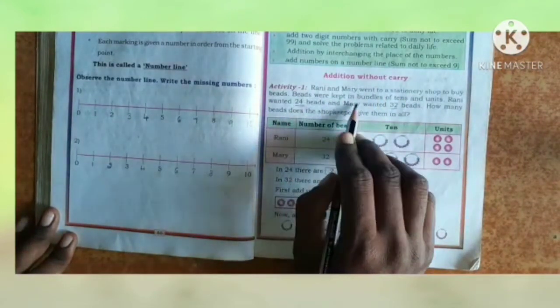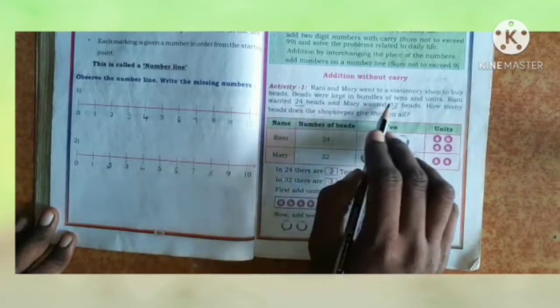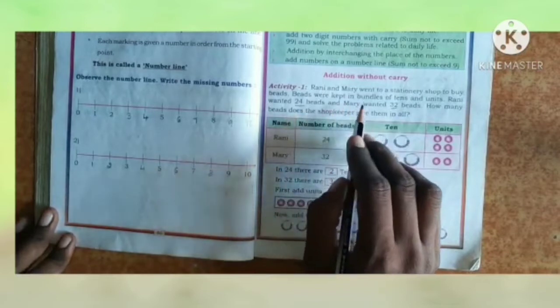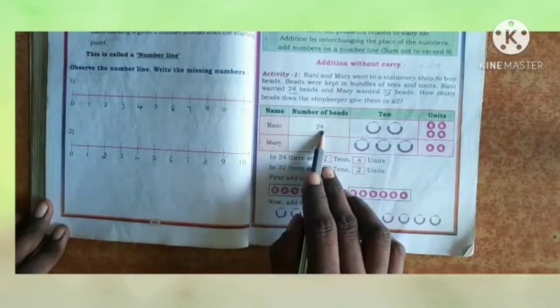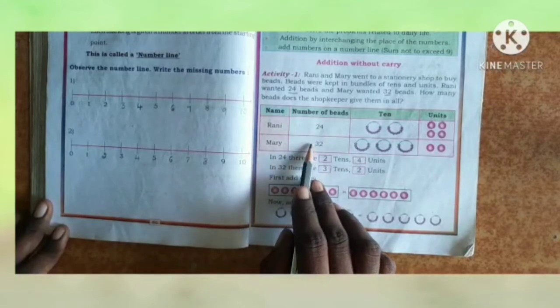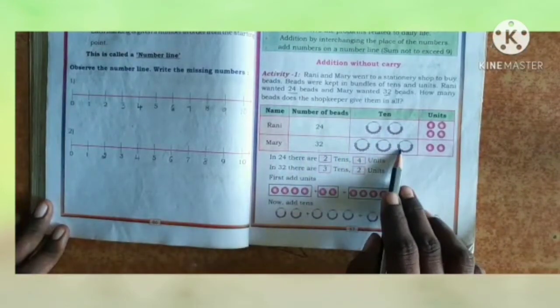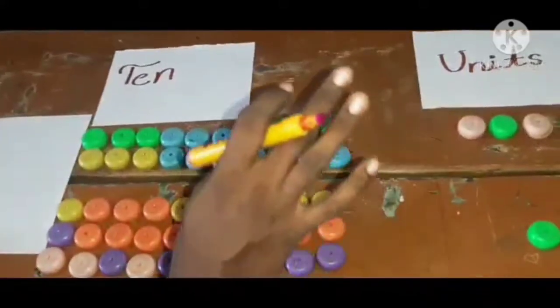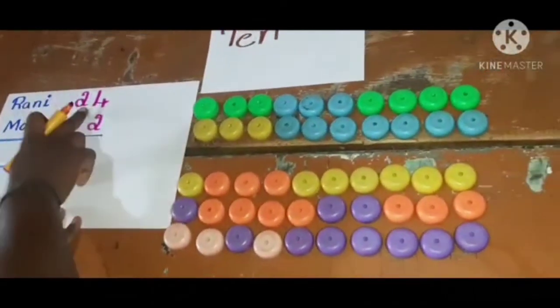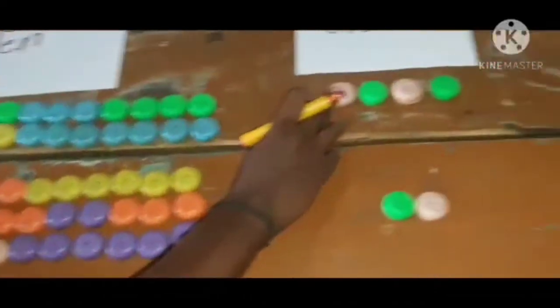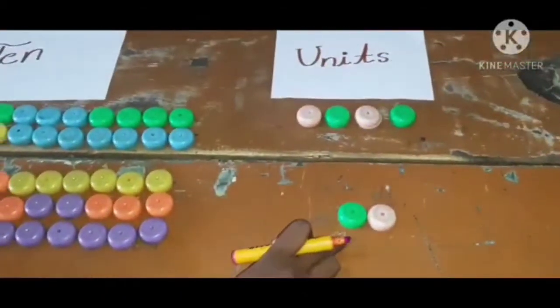So Rani wants 24 beads and Mary wants 32 beads. In 24, there are 2 tens and 4 units. In 32, there are 3 tens and 2 units. So Rani wants 24 beads, Mary wants 32 beads. In 24, there are 2 tens, 4 units. In 32, 3 tens, 2 units.